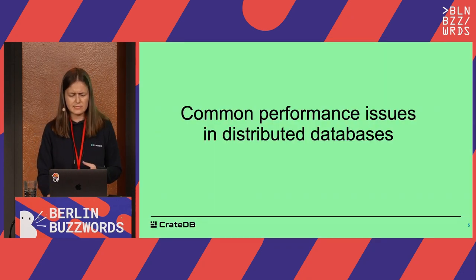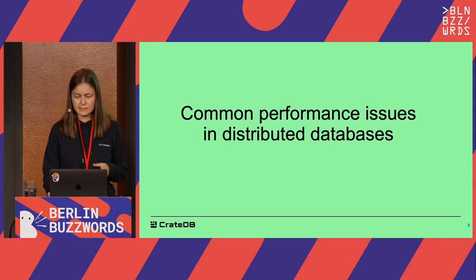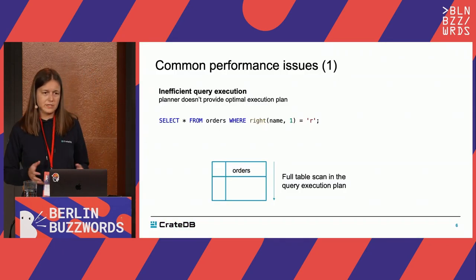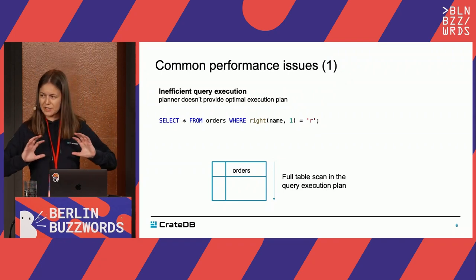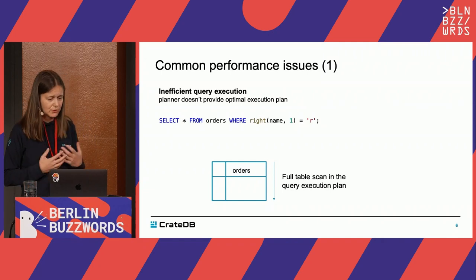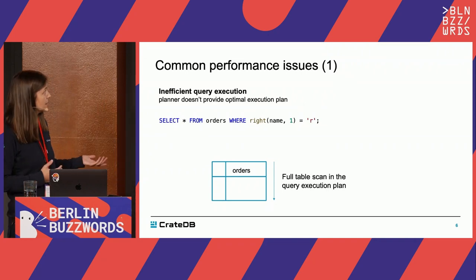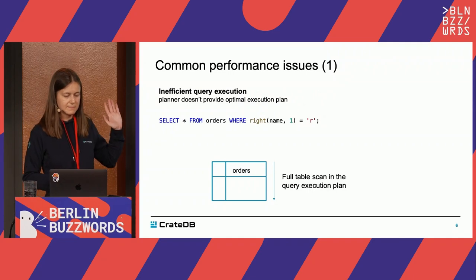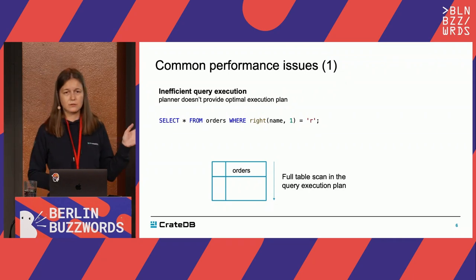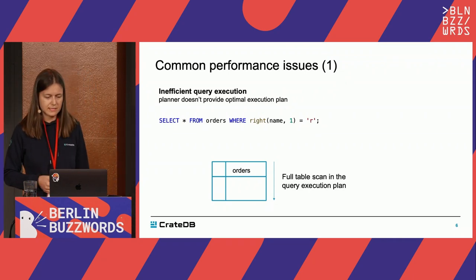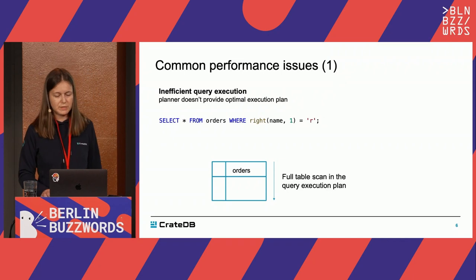Before I start talking about CrayDB performance, I would like to discuss the common issues we see in distributed databases. First, we need to reason about how a query gets executed. In distributed settings, there is an extra challenge on top of this. One common issue is writing a query that doesn't end up with an optimal execution plan. In this simple example, what can go wrong is that this operation runs on every single row in your database — you need to do a full table scan to execute this query, which could be quite slow.